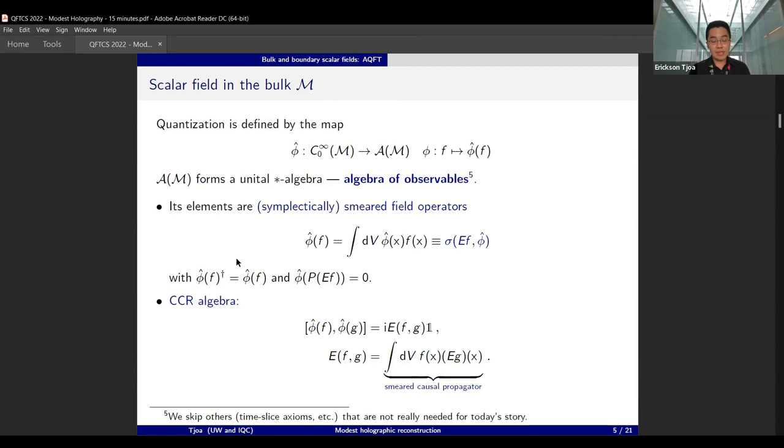From the algebraic perspective, we can say that the quantization really proceeds by sending the space of smooth compactly supported test functions into an algebra of observables, which is a unital star algebra. The elements are what in Bob Wald's book will be called symplectically smeared field operators, which we write suggestively and it obeys the standard properties of hermiticity, satisfying the wave equation, and more importantly, the canonical commutation relations are written in a smeared version.